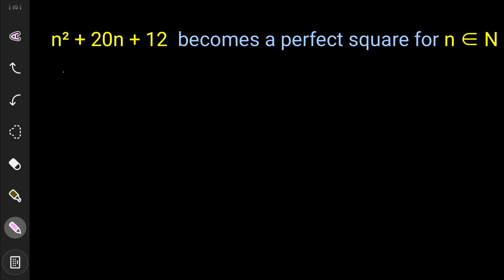It has been given that this particular equation should be a perfect square number, so we will directly equate it. So n² + 20n + 12 equals a square number — let it be equals to k².